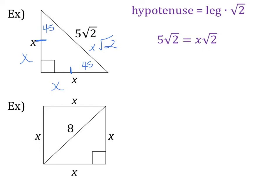So my hypotenuse is 5 root 2 equals leg root 2, so my legs are x, so that's x root 2. I need to solve for x, so I have to divide by the square root of 2. So when I divide both sides by the square root of 2, my square roots cancel out on both sides of my equation. So I'm left with x is equal to 5.